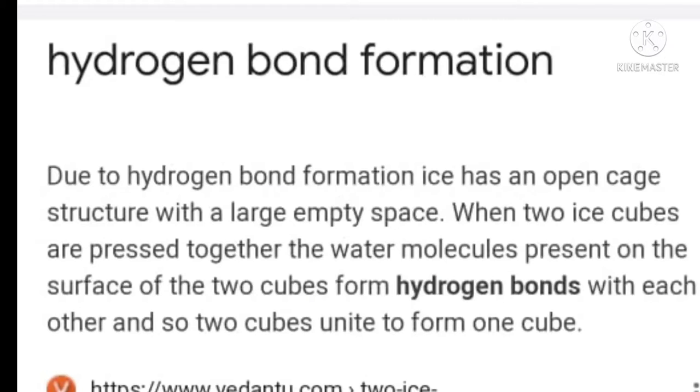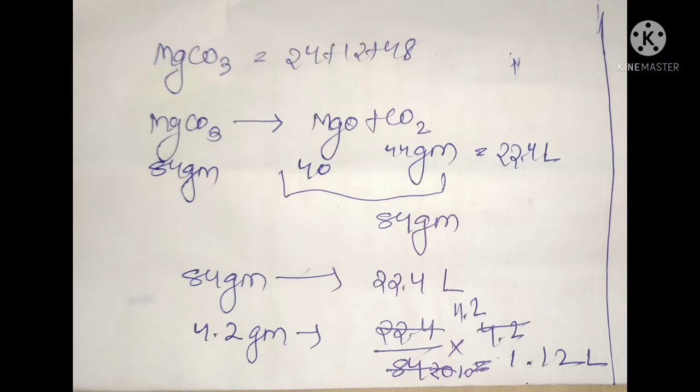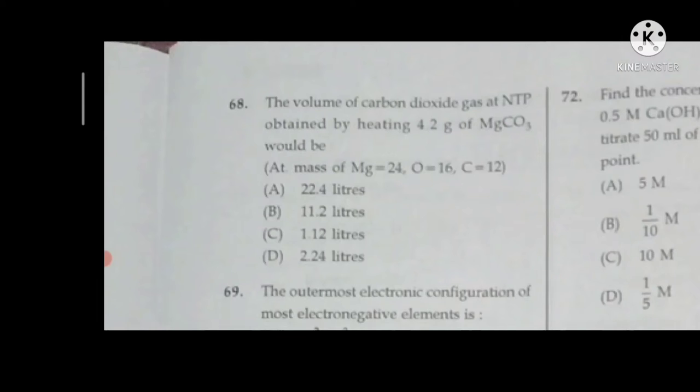This is the question. Next question is 68. The volume of carbon dioxide gas at NTP obtained by heating 4.2 grams of MgCO3 would be. The answer is 1.12 liter. But the answer is option A, 22.4 liter.